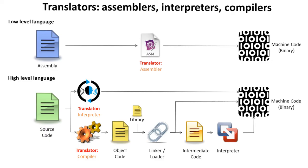The big difference for the exam is: interpreters take one line of source code at a time, compile and run it; whereas compilers take the entire source code, translate it, and then produce the machine code.